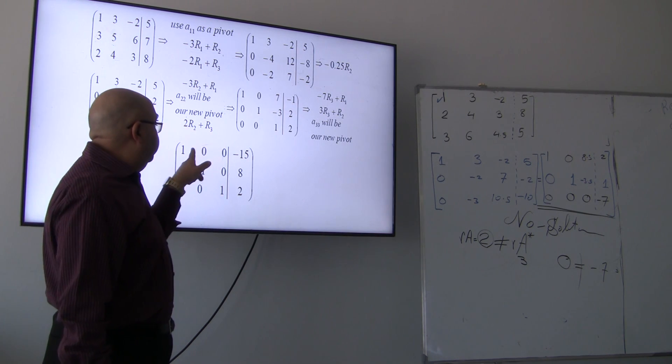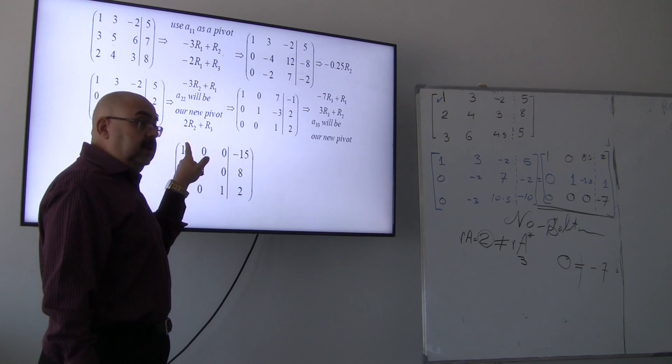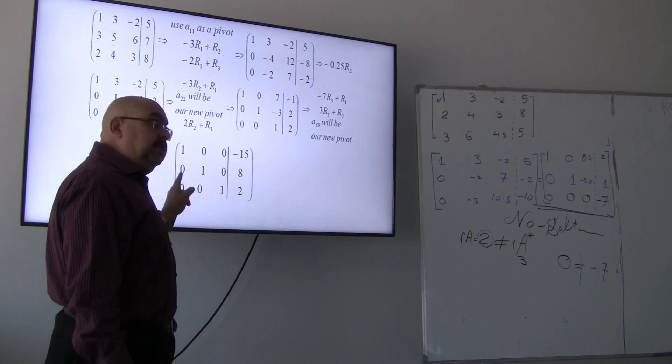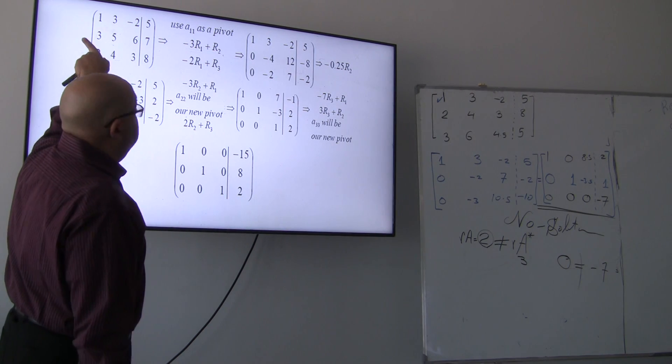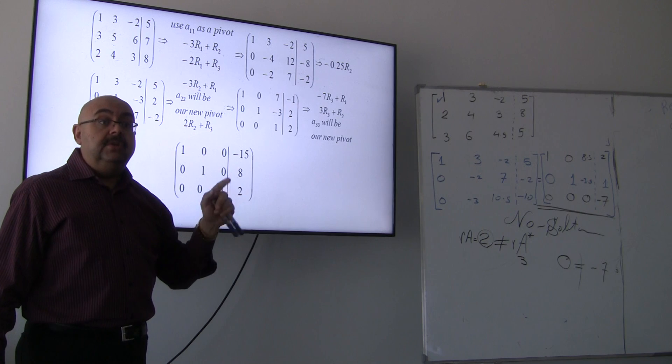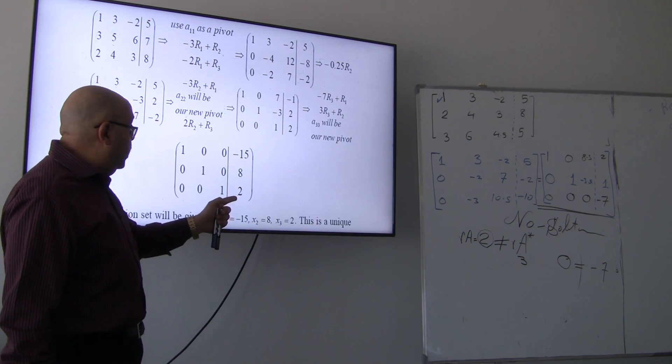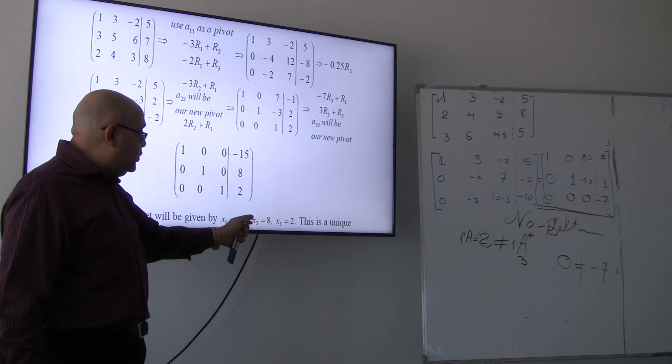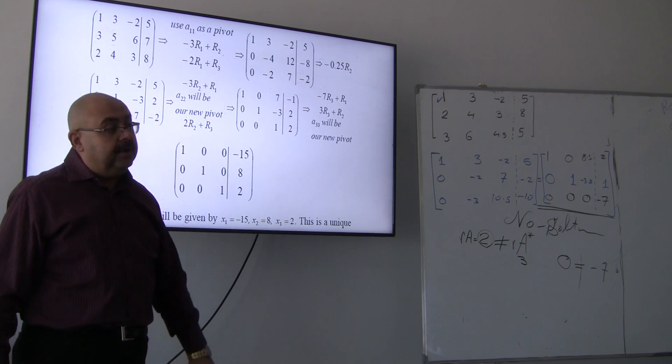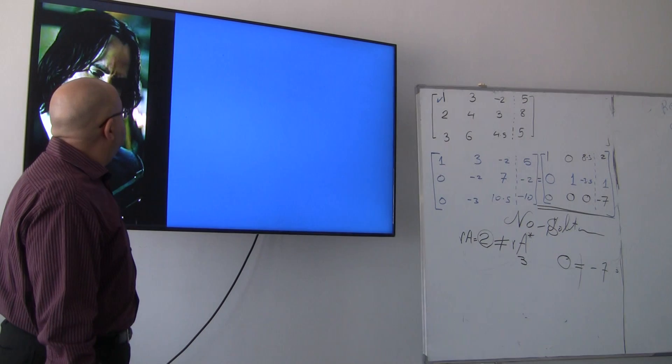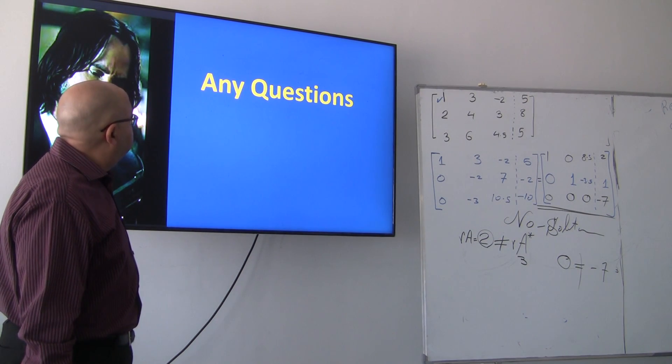Remark. The rank of the coefficient matrix is three. The rank of the augmented matrix is three. The number of unknowns is three. So this is a unique solution. The solution set is negative 15 for x1 and 8 for x2 and 2 for x3.